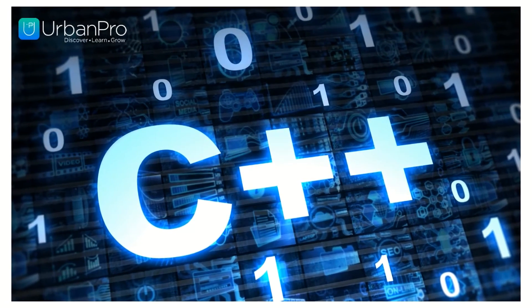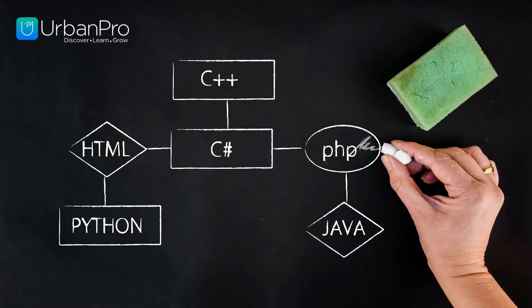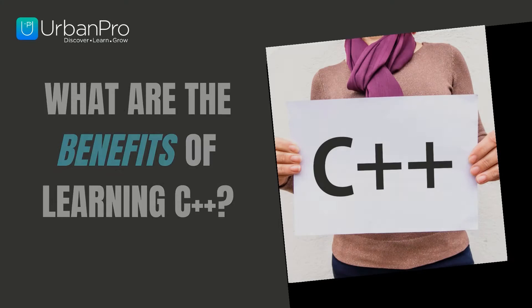C++ is one of the world's most popular programming languages. It was developed by Bjarne Stroustrup as an extension to the C language. It is a cross-platform language that can be applied to form high performance applications, giving programmers a high level of control over system resources and memory.